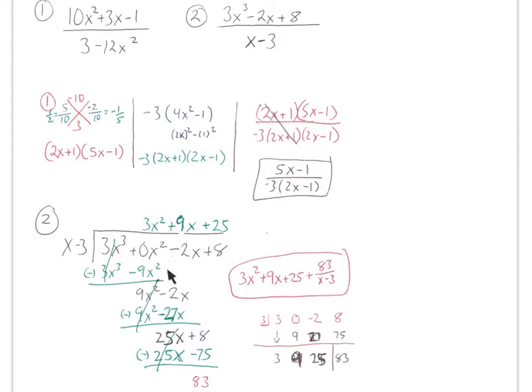Bring this down. What times x gives you 9x squared? 9x. Multiply by both pieces. Subtract down. What times x gives you 25x? 25. Multiply by both pieces. Subtract down. That is your remainder over your divisor. It's kind of like a mixed number.